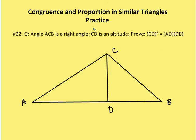The first problem: given angle ACB is a right angle and CD is an altitude, prove that CD squared is equal to AD times DB.